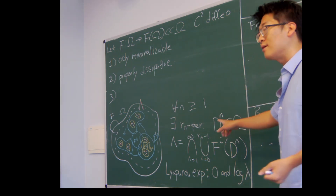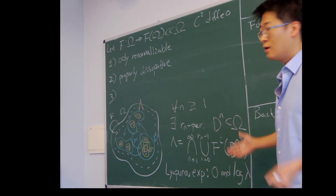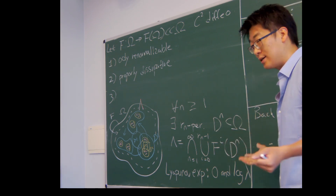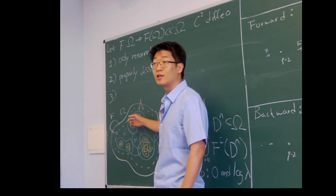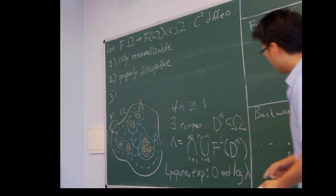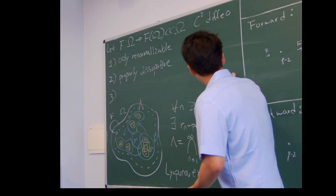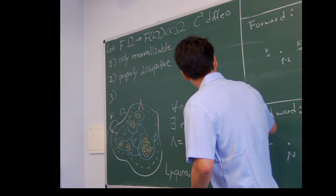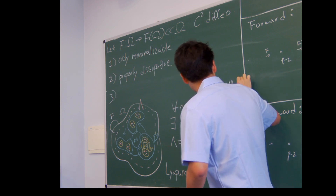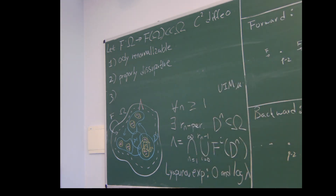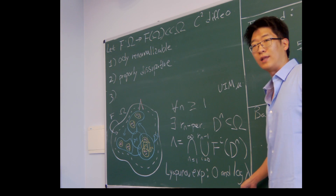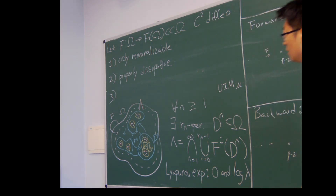We can't yet prove it's minimal, and we can't yet prove it's totally disconnected, but we can prove it is uniquely ergodic — so it has a unique ergodic measure, which I'll call mu. With respect to this invariant probability measure mu, it has two Lyapunov exponents: one zero and the other negative, reflecting the fact that this is a dissipative diffeomorphism. We'll call this negative value log lambda.